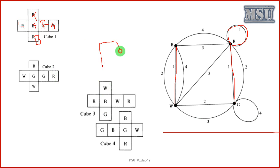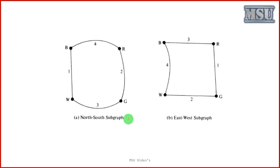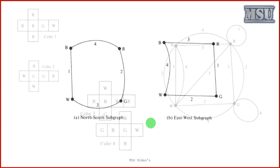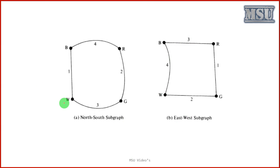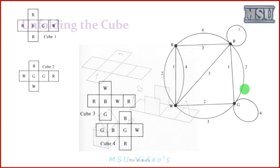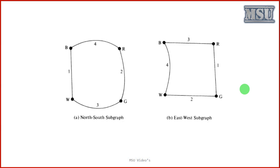We have to place the cubes one by one such that no two colors appear more than once in all four columns. From this original graph, we construct two subgraphs to get the result. We can consider a north-south subgraph: on the north and south side, we have black and white for the first cube, red and green for the second cube, white and green for the third, and blue and red for the fourth. On the east and west side, we have all four graphs. These are the main applications of graph theory — the color cubes problem can be easily represented and solved using graph theory.